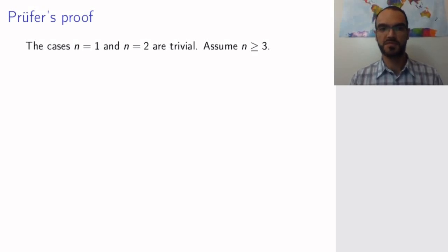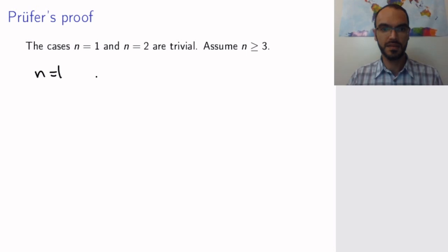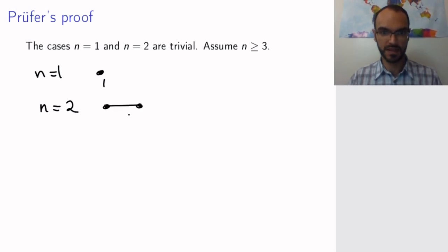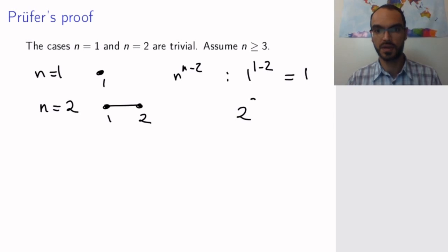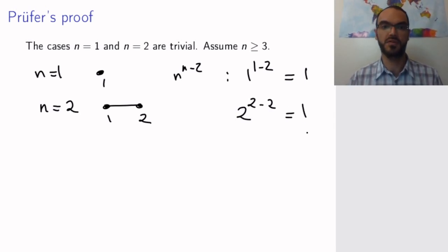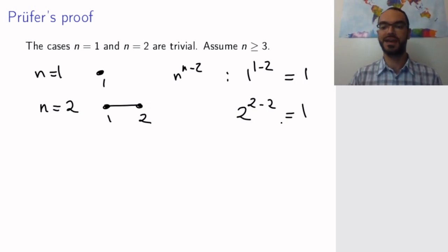Let us start with Prüfer's proof. The cases n equals 1 and n equals 2 are trivial. For n equals 1 the only tree is a single vertex, and for n equals 2 the only tree is a single edge. Indeed, 1 to the power of 1 minus 2 is 1, and 2 to the power of 2 minus 2 is 2 to the power 0, which is also 1. So these cases are trivial and for the rest of the proof we can assume that n is at least 3.